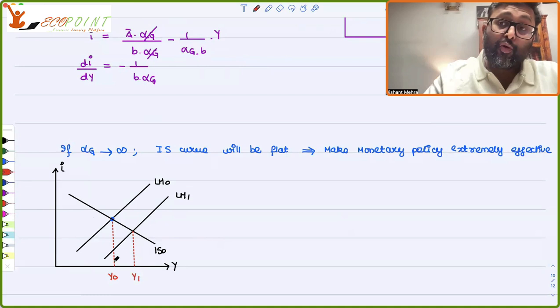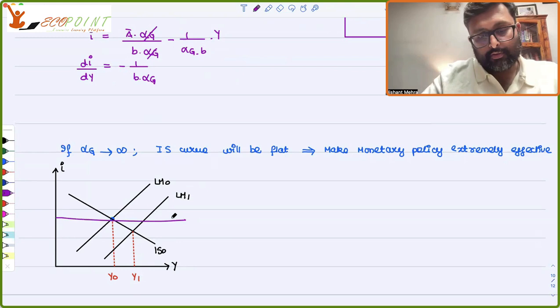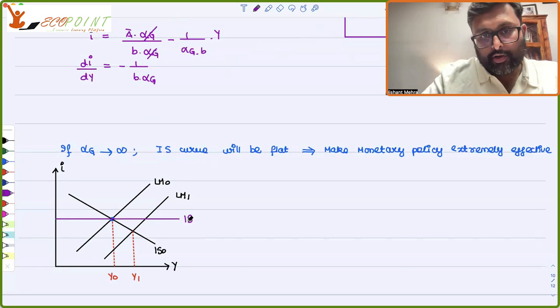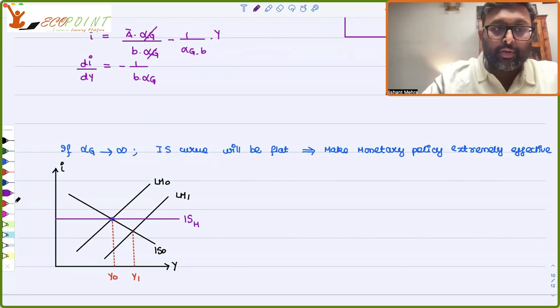But if you want to have the maximum impact, maximum impact of the monetary policy, so you actually need IS curve to be horizontal. Now, so if IS curve become horizontal, let me call that as ISH. So in that case, in case of the LM is going to increase, what is going to be the increase in output till Y2?